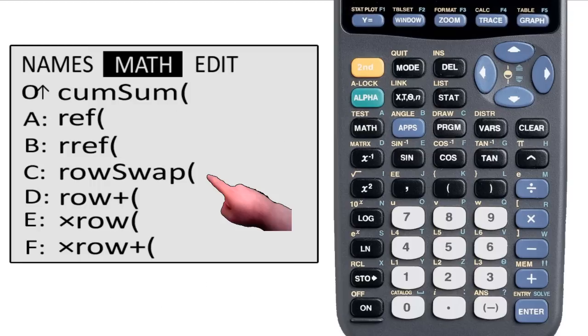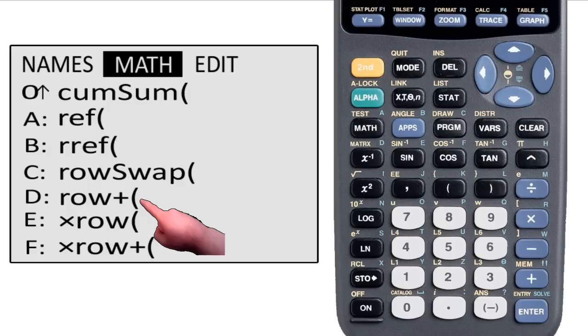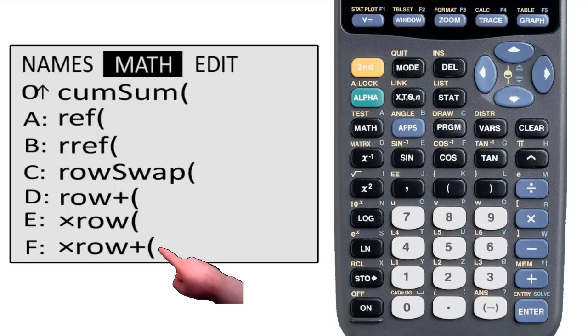The last ones are row operations and they can be kind of hard to use. If you master them though, they are actually easier to use than doing them by hand. I'm going to go over them one at a time.